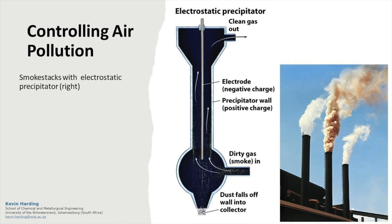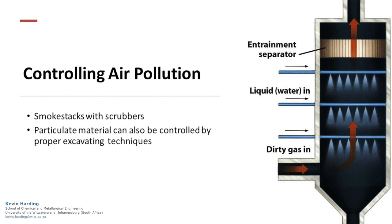As engineers, it is important to minimize pollution emitting from industrial sites. One way of controlling air pollution is by using an electrostatic precipitator. Dirty gas enters the bottom of the smokestack and a combination of a positive wall and negative electrode results in dust collecting on the walls, which can be later removed in a collector. A clean gas then exits at the top of the precipitator.